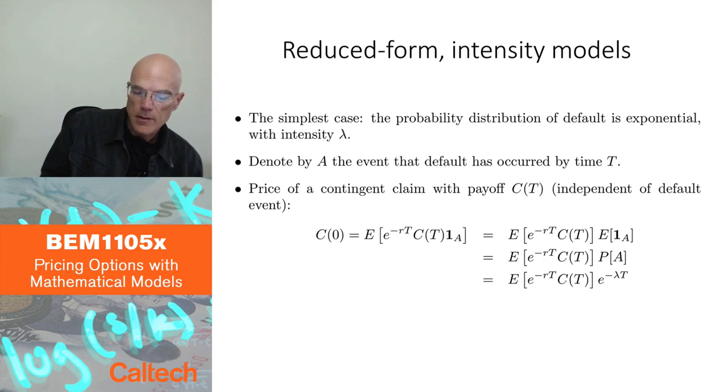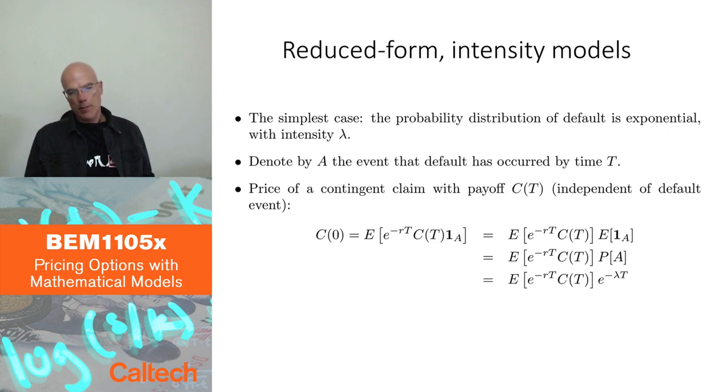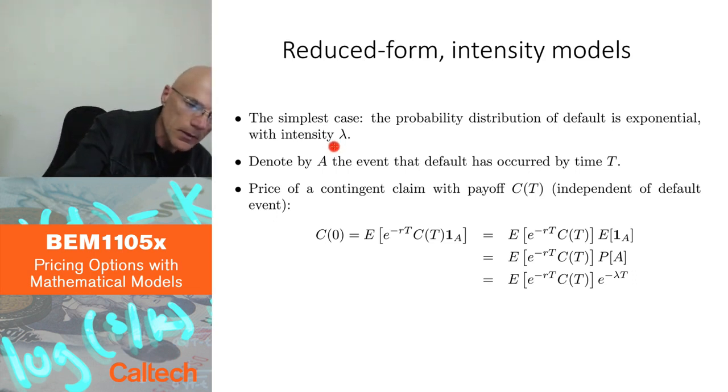I'm just going to present the simple case and mention a little bit about the general case. The simplest case is like when we talked about exponential distribution before with jumps in the stock price arriving at exponentially distributed times. Here we're going to assume that the default happens after an exponentially distributed random time with parameter lambda. Lambda is the so-called intensity, the parameter in the exponential distribution. Higher lambda means higher probability of default arrival, and lower lambda is lower probability of default. That's the simplest thing.